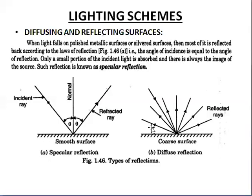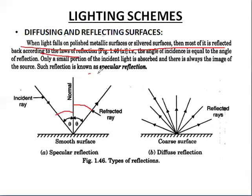When light falls on a polished metallic surface or silver surface, most of it is reflected back according to the laws of reflection, where the angle of incidence is equal to the angle of reflection. Only a small portion of incident light is absorbed, and there is always the image of the source. This type of reflection is known as specular reflection.